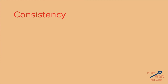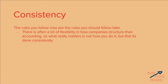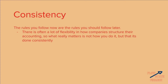Next, let's talk about consistency. Consistency is basically the idea that the rules you follow now are the rules you should follow later. There's often a lot of flexibility in how companies structure their accounting, so what really matters is not exactly how you do it — because GAAP is only a set of guidelines — but that it's done consistently.